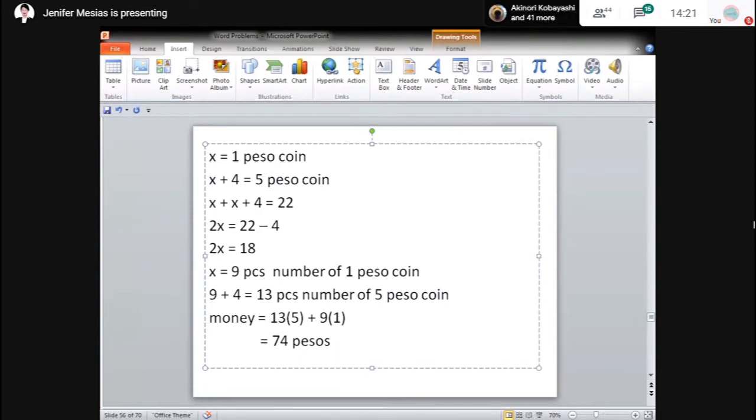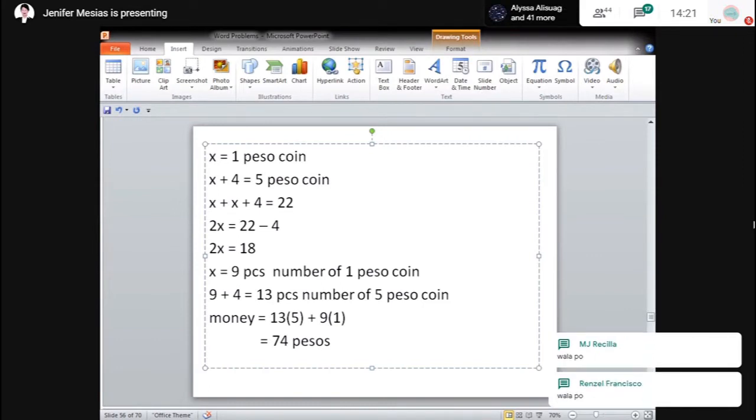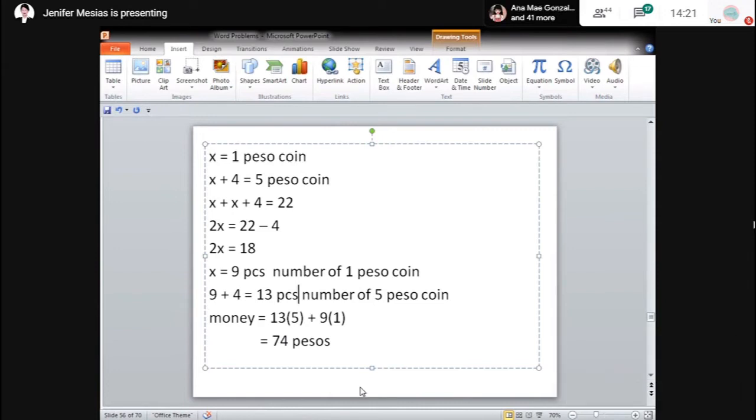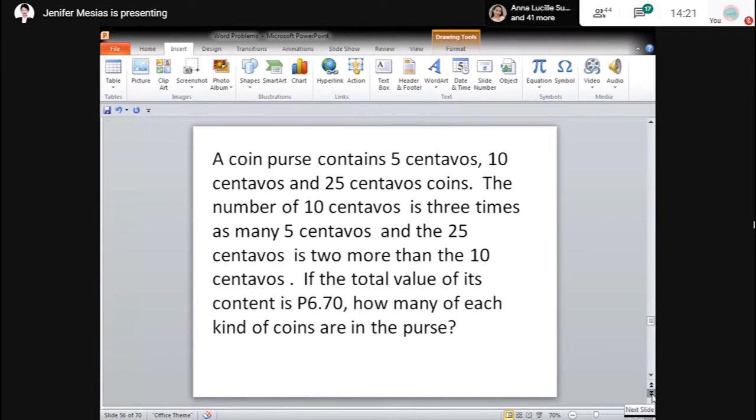Question? Question po, may tanong? Wala. Wala po. O, sige. O, next na. Pagalawa example naman tayo. Second example. Ayan. A coin purse contains, ayan, yung wallet, i-analyze na natin. Yung wallet daw, meron siyang laman na different kinds of coins. So, yung laman niya ay 5 centavos, 10 centavos, 25 centavos. So, meron 3 different kinds ng centavos yung coin purse. So, the number of 10 centavos is 3 times as many as 5 centavos. And 25 centavos is 2 more than 10 centavos. So, yung total value nung coins ay 6.70. So, ang tinatanong, ilang 5 centavos, ilang 10 centavos, at ilang 25 centavos meron.